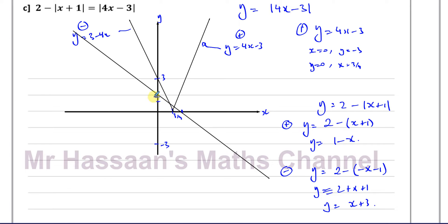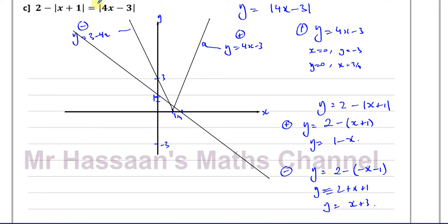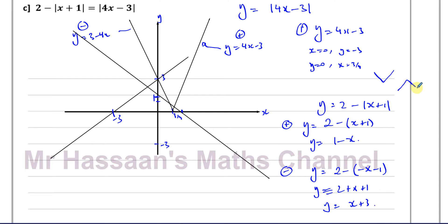The line y = x+3 passes through -3 on the x-axis and +3 on the y-axis. Now because there is a negative sign in front of the modulus, the V-shape will be inverted — an upside-down V rather than an upright V. If it were a positive sign in front it would be an upright V; a negative sign makes it an upside-down V, like a reflection.